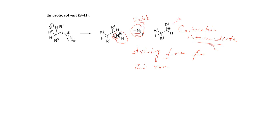This carbocation intermediate is electron deficient. So any electron-sufficient species will attack on this carbocation. If there is any species with more electrons — in other words, any nucleophile present in the reaction mixture — it will attack on this carbocation. But in this case, there is no nucleophile present in the reaction mixture, so no attack will take place at this carbocation position.